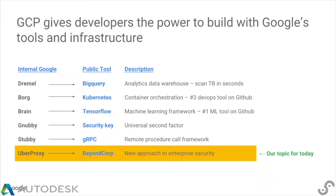It comes as part of a long legacy of taking our internal tools and offering them up to anybody. BigQuery began its life as Dremel inside of Google. Kubernetes, the number three DevOps tool on GitHub, began its life as Borg. TensorFlow, already number one on GitHub, is a machine learning framework that began its life as Brain. If you've used a security key, its internal name within Google is called Nubby. gRPC is called Stubby. And BeyondCorp — as Googlers, we use it, and it's called Uberproxy.